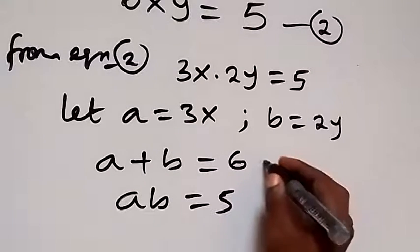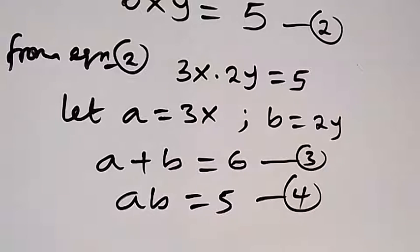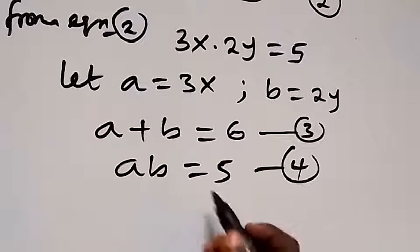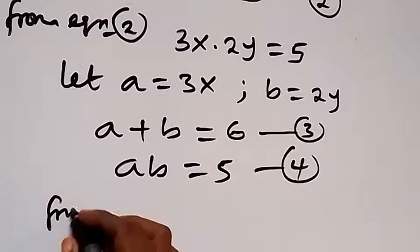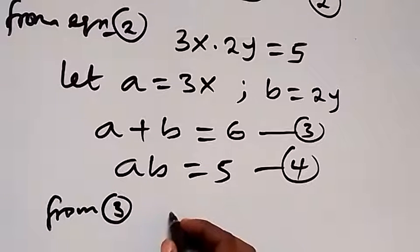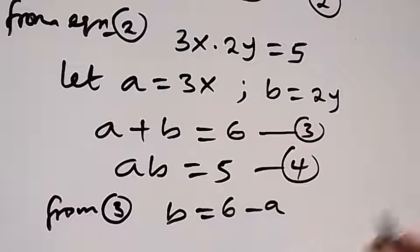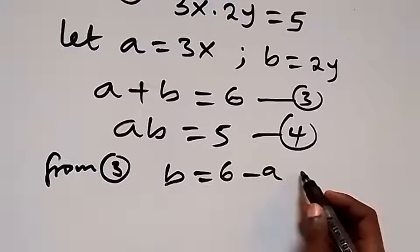Let's call a plus b equals 6 as equation 3, and a times b equals 5 as equation 4. From equation 3, let's make b the subject — b will then be equal to 6 minus a.